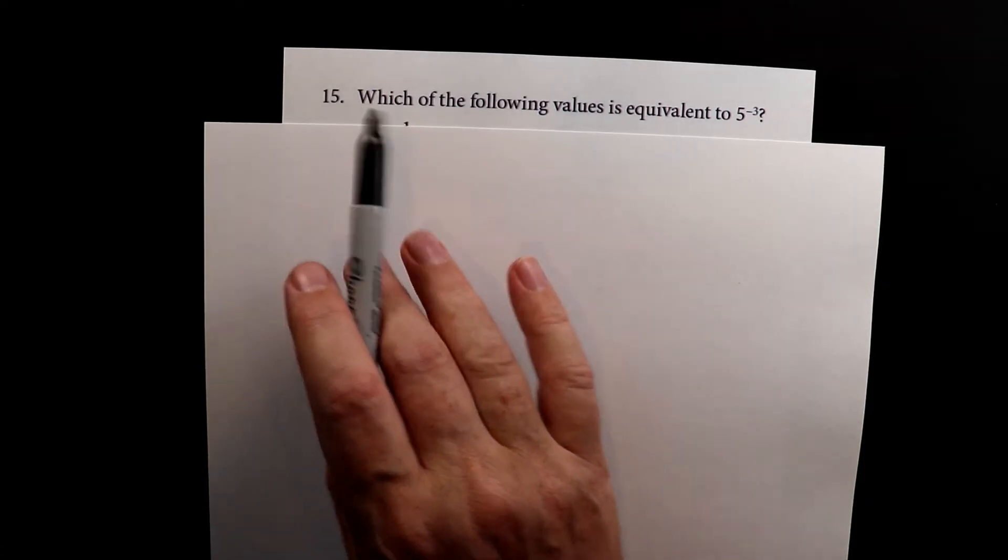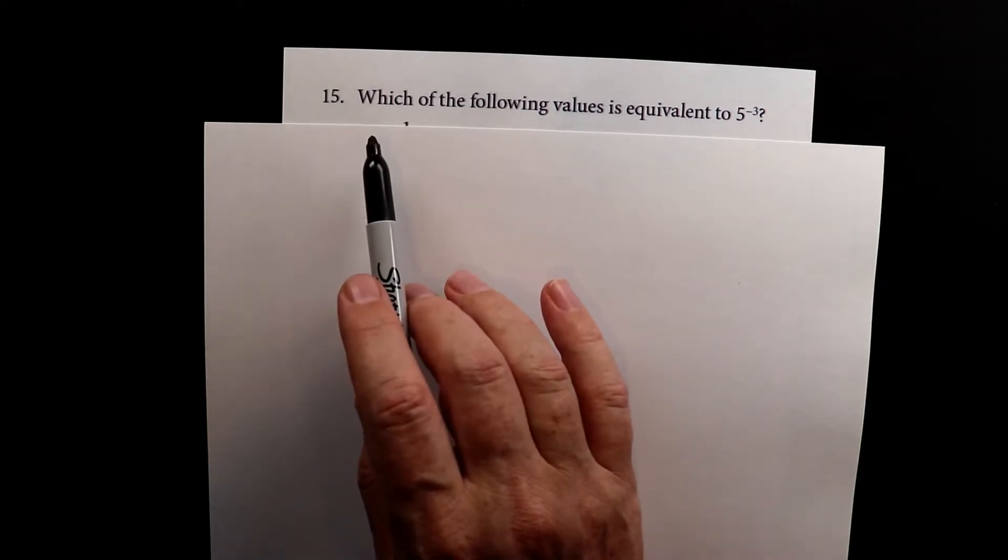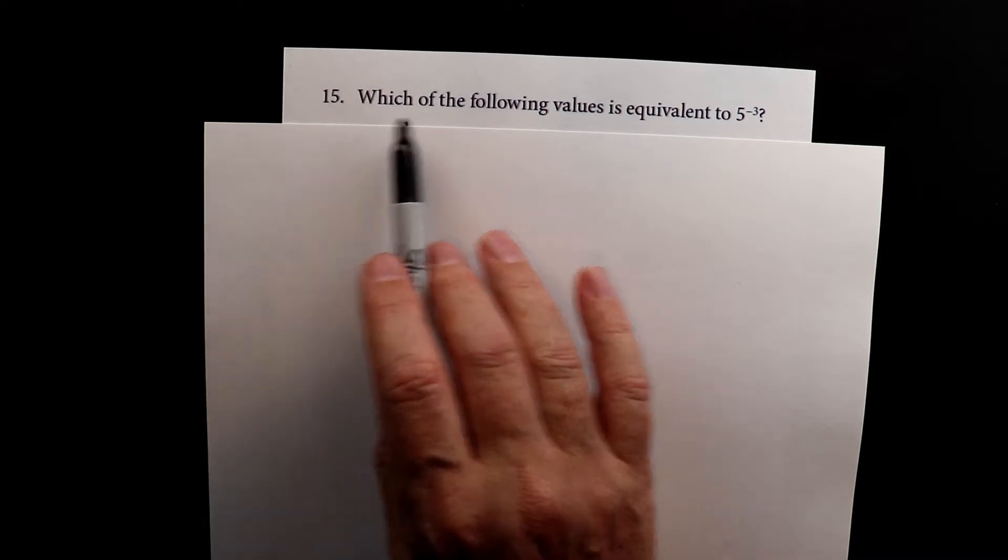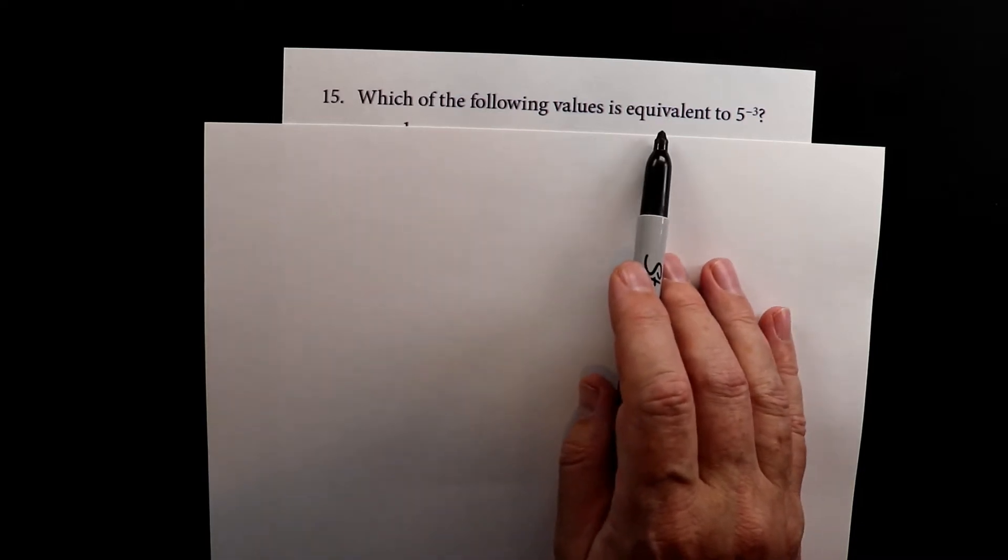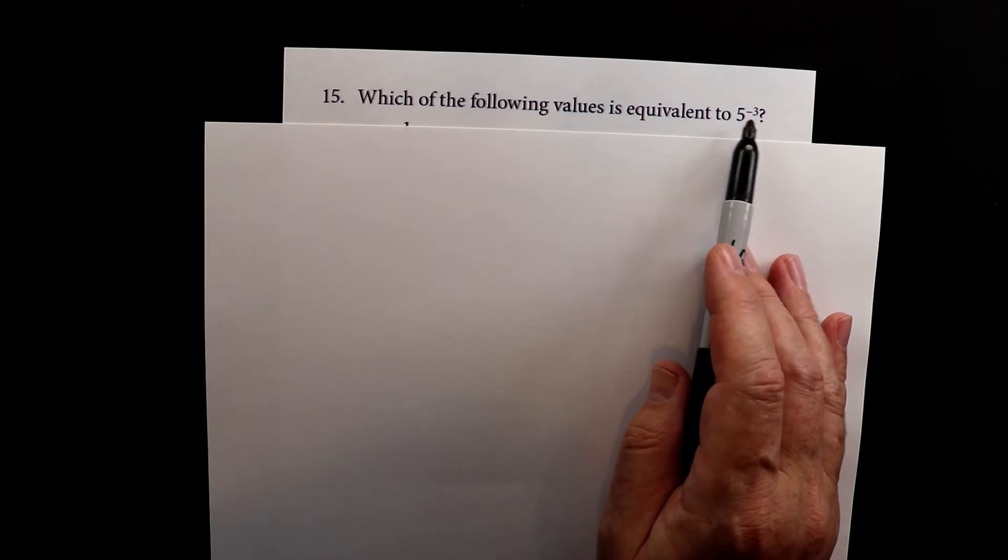This is number 15 for the second test of the Accuplacer for math. Which of the following values is equivalent to 5 to the negative third?